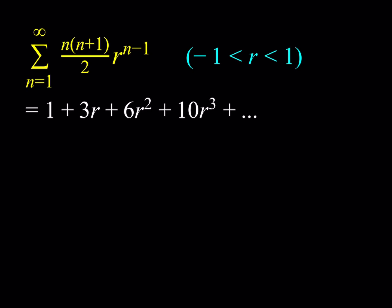Hello, everyone. In this video, we're going to be evaluating an infinite sum: 1 plus 3r plus 6r² plus 10r³ plus dot dot dot. We're going to be evaluating this sum where r is between negative 1 and 1, so that we can get a convergent series. It's also given with sigma notation as n times (n+1) divided by 2, times r to the power n minus 1.